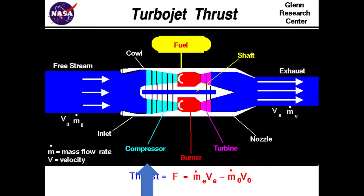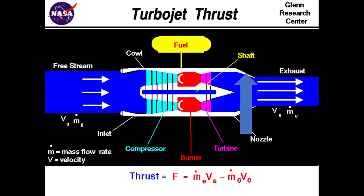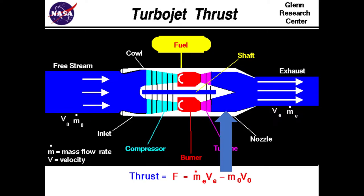Turbojets work in a very similar way to turbofans. The main and most obvious difference is that they don't have a fan. Instead, the air is fed straight into the compressor stage. After passing through the compressor, it's fed into the combustion stage, then into a turbine, which turns the shaft that drives the compressor at the front of the engine, and then exits the turbine.